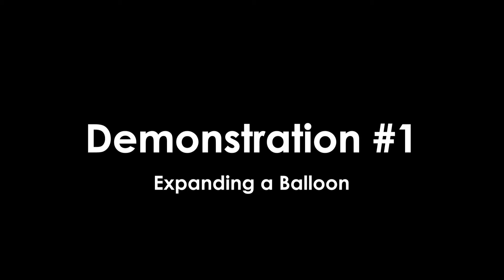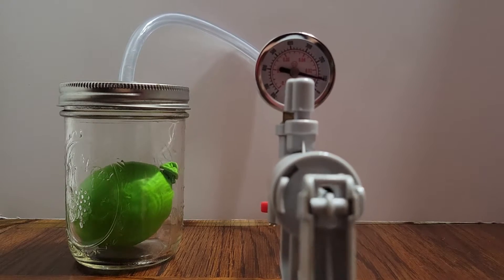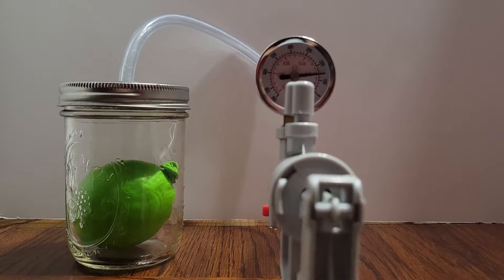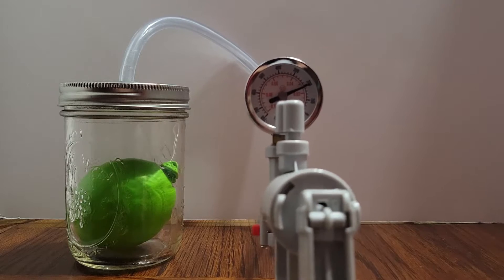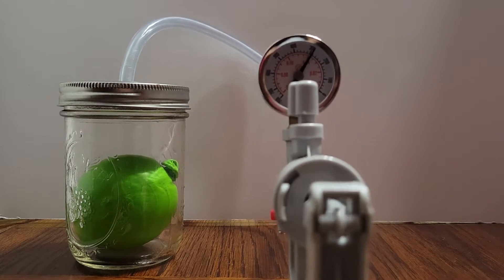For our first demonstration we're going to place our balloon in the chamber before we seal it. Before you remove any air, the balloon's internal pressure is in equilibrium with the pressure inside the jar. As you remove air with your pump you create a vacuum and lower the pressure within the chamber.